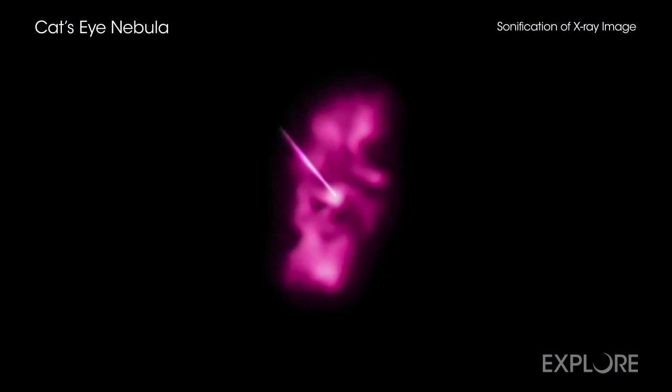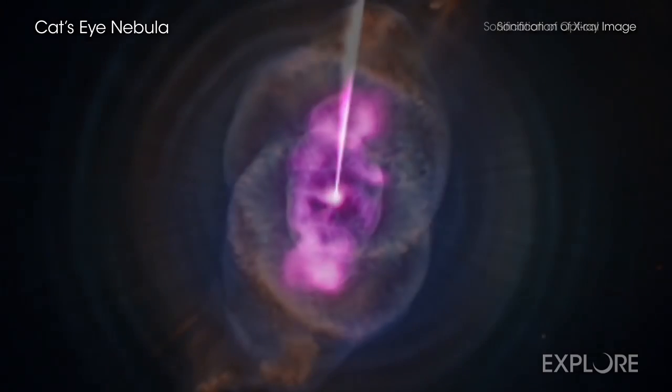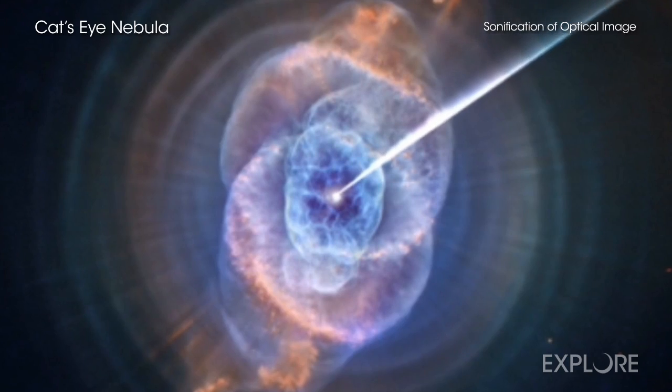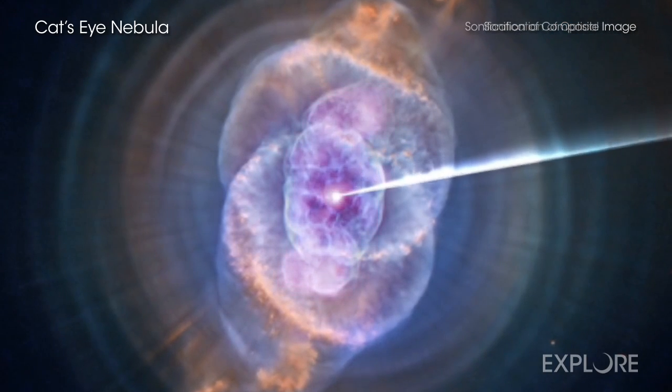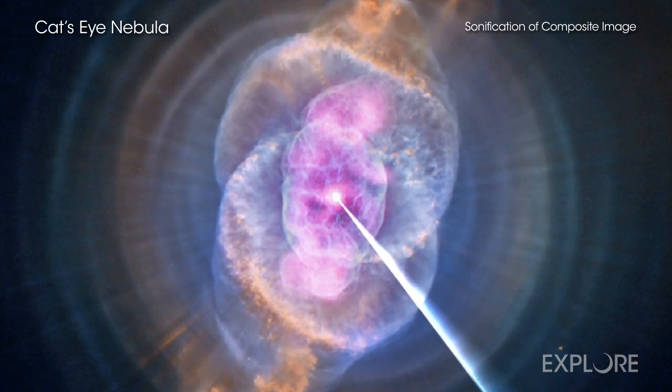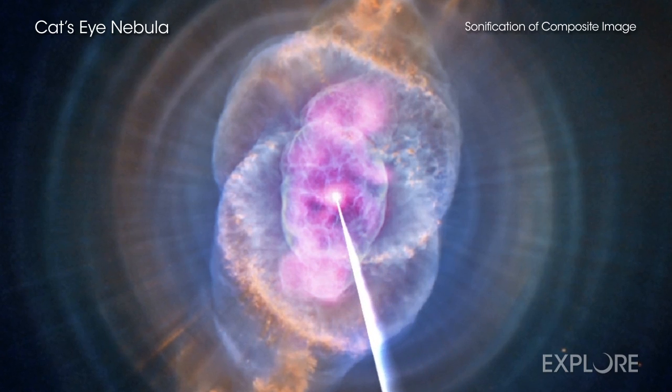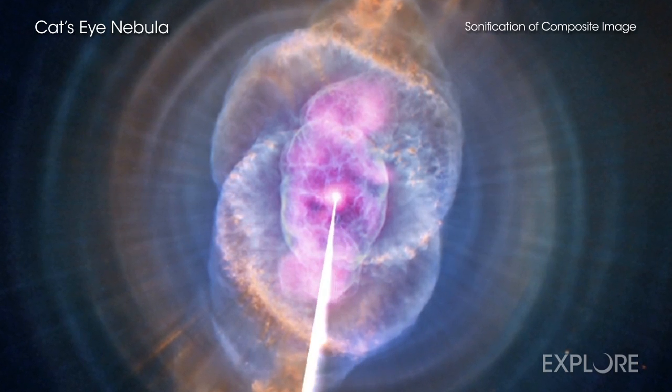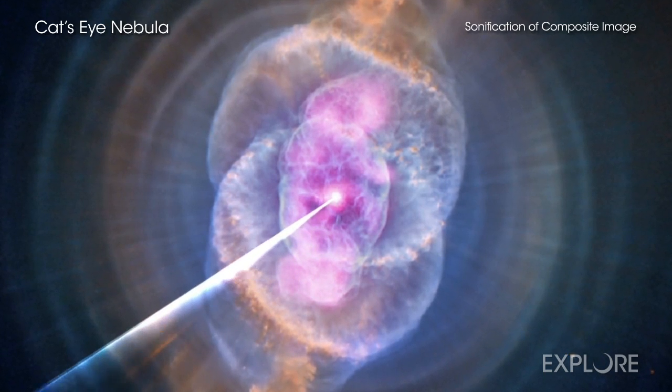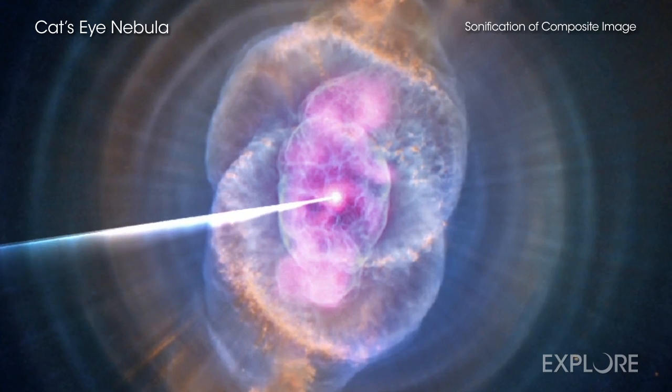This image of the Cat's Eye contains both X-rays from Chandra around the center and visible light data from the Hubble Space Telescope, which show the series of bubbles expelled by the star over time. To listen to these data, there is a radar-like scan that moves clockwise, emanating from the center point to produce pitch. Light that is further from the center is heard as higher pitches, while brighter light is louder.